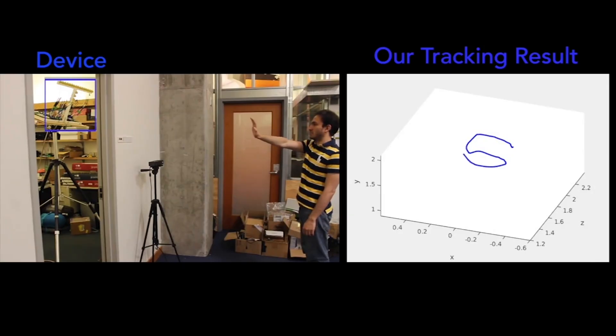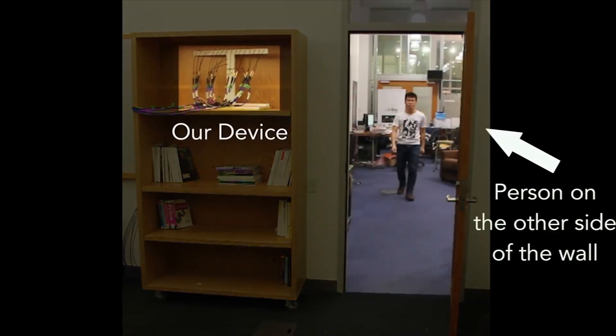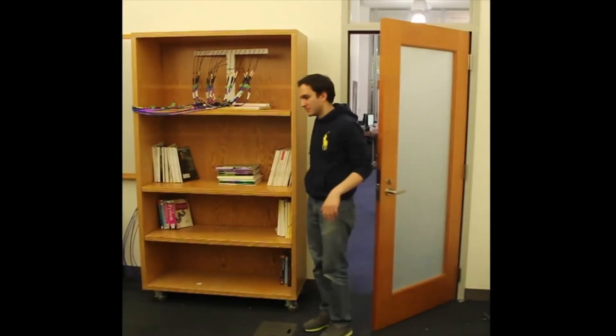At a very high level, it's using a very simple principle that wireless signals reflect off our body and traverse walls. So it's using these very low power signals, sending them and observing their reflections of the body through the wall and then analyzing these reflections.